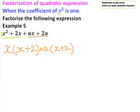We have x plus 2 is common, so we factor it out. So we have x plus 2, cross the bracket.